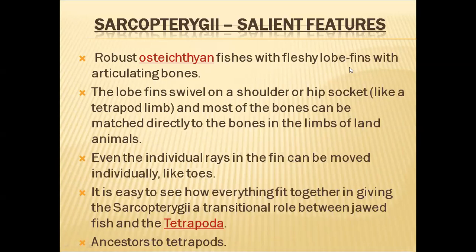Another important feature of these fins is that not only do they have muscles or flesh in them, they also have articulating bones or jointed bones. In the Actinopterygii group, the fins have only ray-like structures, and those rays are not articulated bones — they are single structures. But here in the fins of Sarcopterygii, the bones have articulation joints just like our forelimbs and hind limbs have jointed bones.